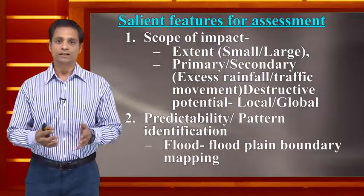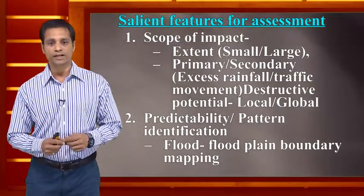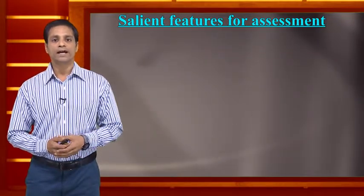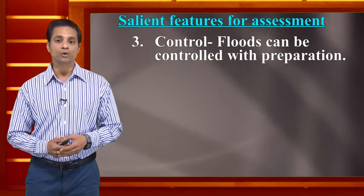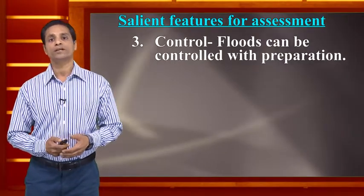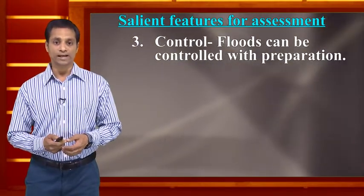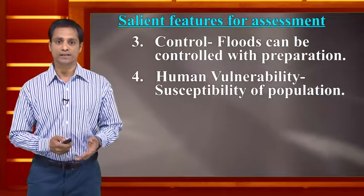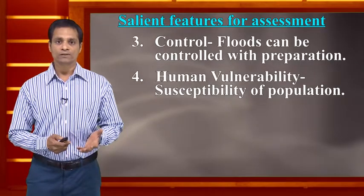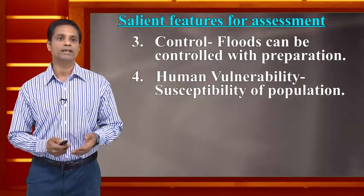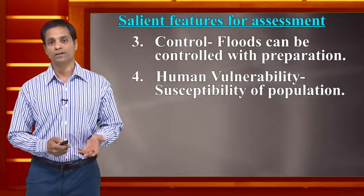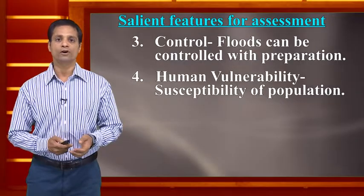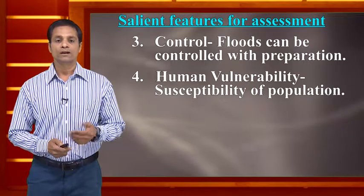For floods, the movement of a river is not straight. For toxic emissions — such as in the Bhopal gas tragedy — there is never a clear boundary. The third salient feature is control measures: can floods be controlled with proper preparation and response? The fourth is human vulnerability — the susceptibility of a population. Because of flood-related water quality impacts, kids and senior citizens are more susceptible, while resilience is higher for young men and women.